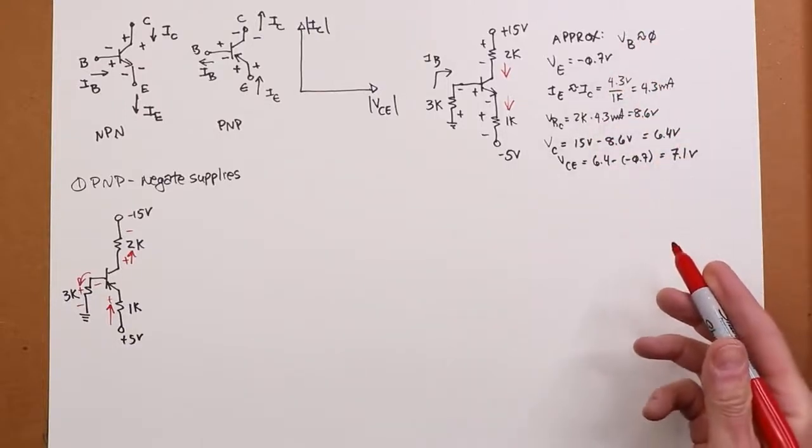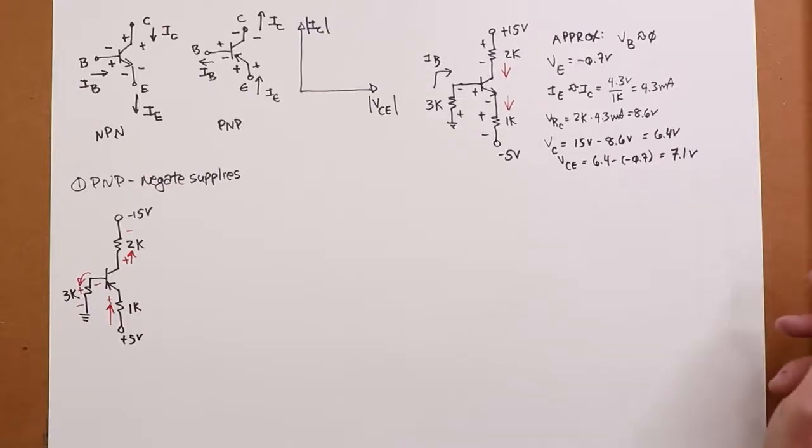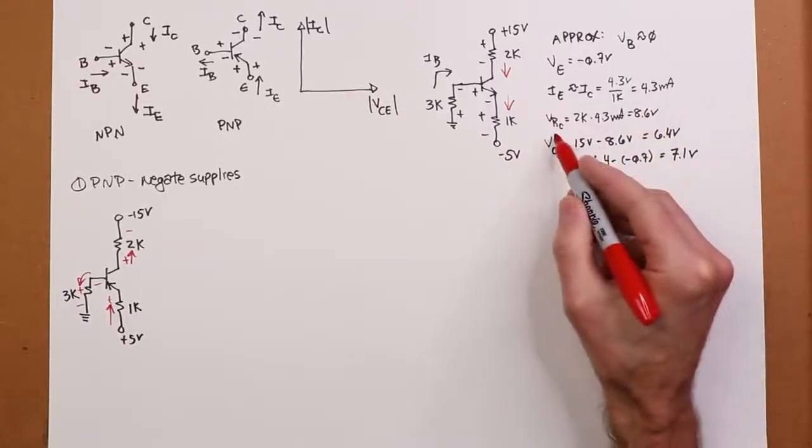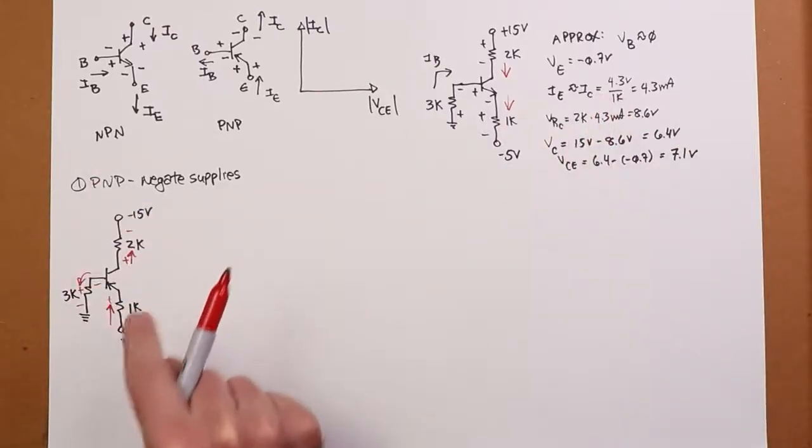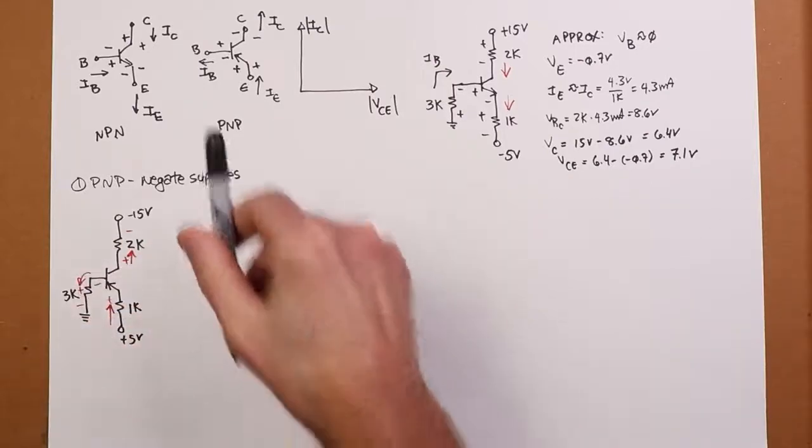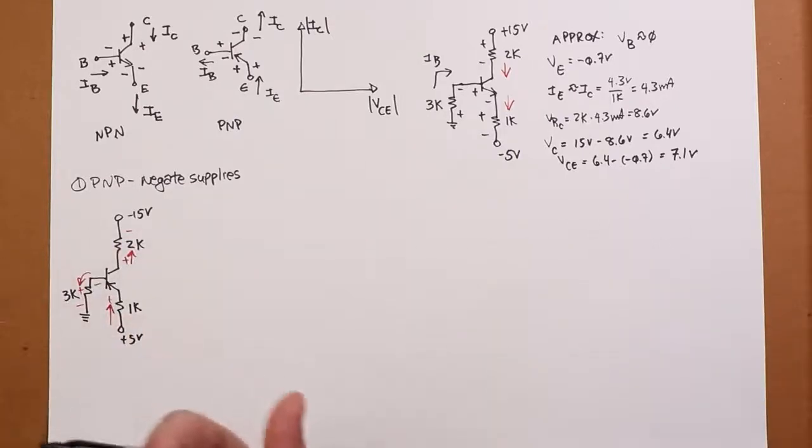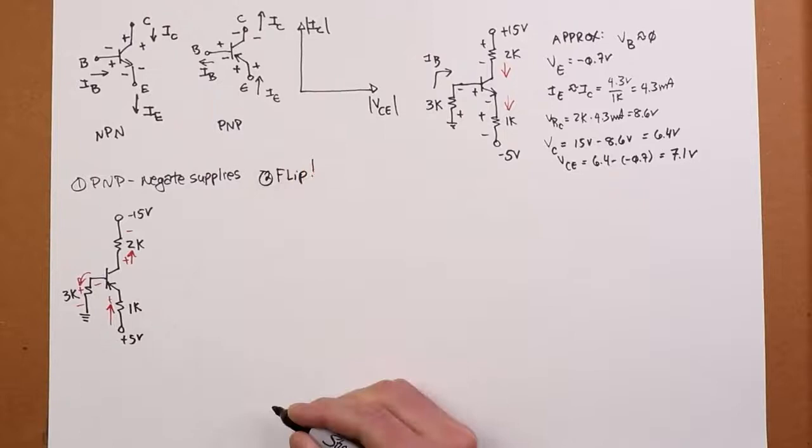And if we grind through the calculations here, we'll get these same exact magnitudes. Now VCE will literally come up negative, negative 7.1 volts. So what I was explaining over here is what will show up, but you'll still get 4.3 mils. The drop across RC will still be 8.6 volts. It's just flipped.